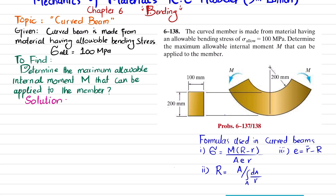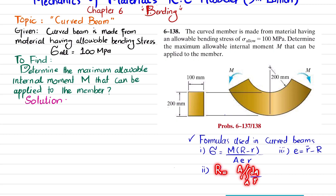Let's start with the formulas used in curved beam analysis. The first is σ = M(R − r) / (A · e · r). The second is e = r-dash − R. The third is R = A / ∫(dA / r) over the entire area. We will go through each of these terms.